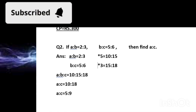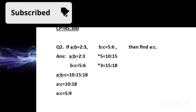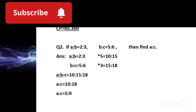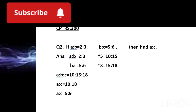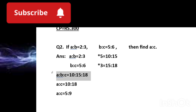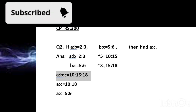We write a:b = 2:3 and b:c = 5:6. Here b is 3 in the first ratio and 5 in the second. To equalize b, we multiply the first ratio by 5 (the second b's value) to get a:b = 10:15, and multiply the second ratio by 3 (the first b's value) to get b:c = 15:18. Now b equals 15 in both ratios.